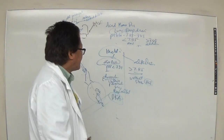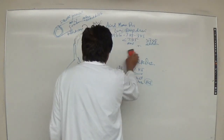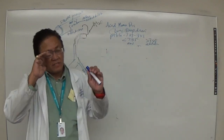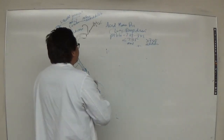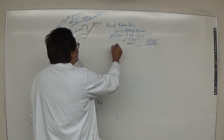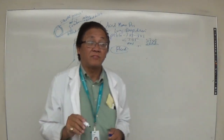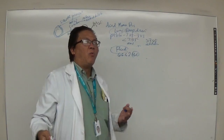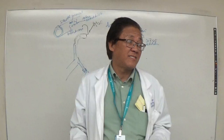Now let's move on to fluids and electrolytes. This is a brief overview — we have limited time. Fluid balance is very important. Your body is 66.6% water. If you weigh 100 pounds, about 66.6 pounds is water.